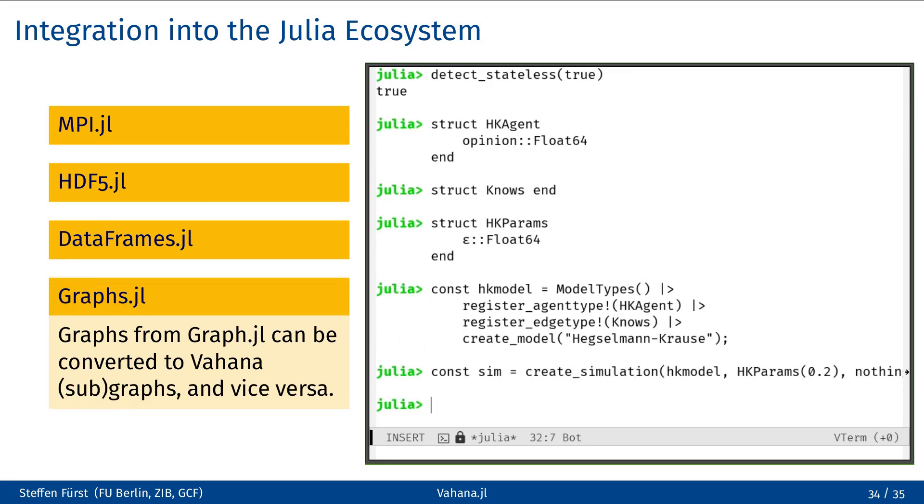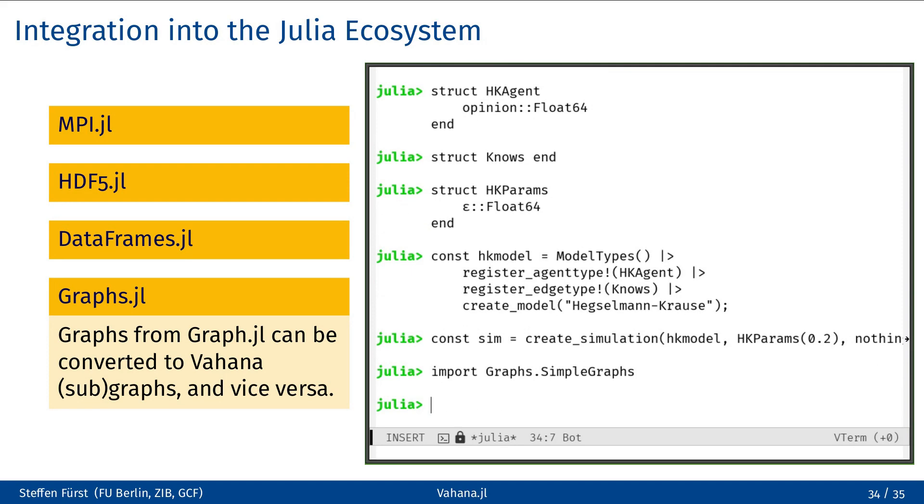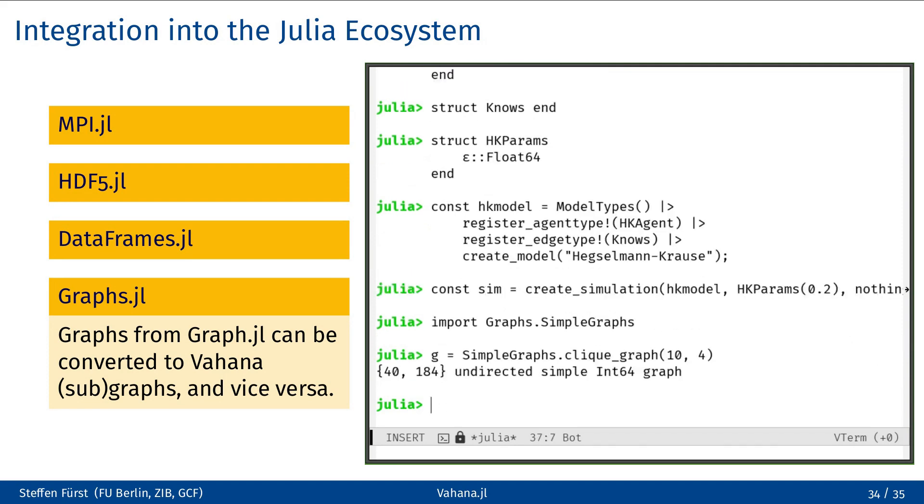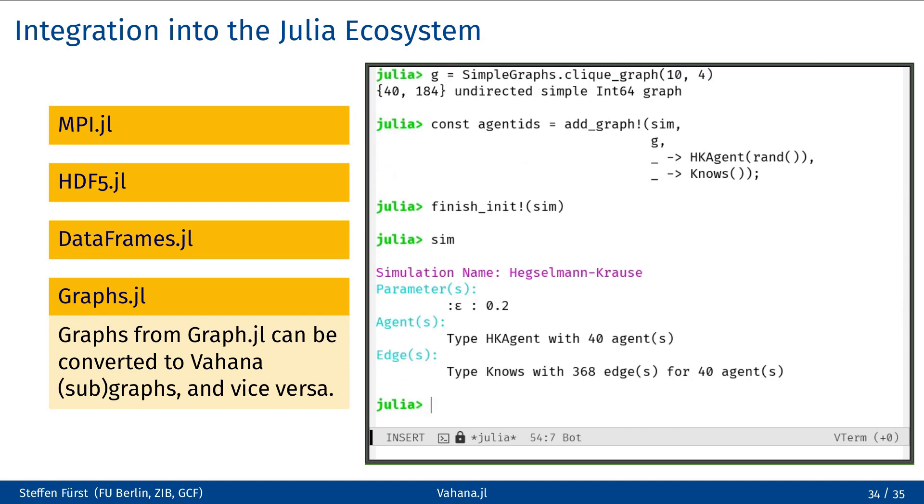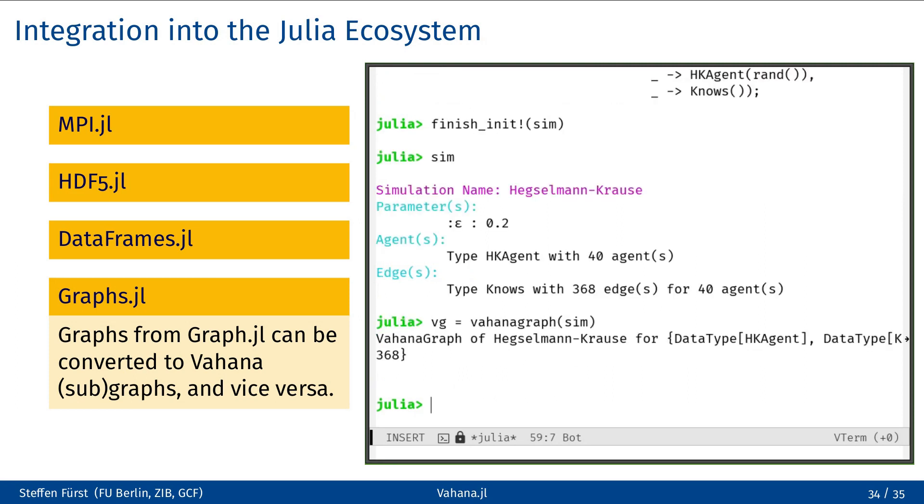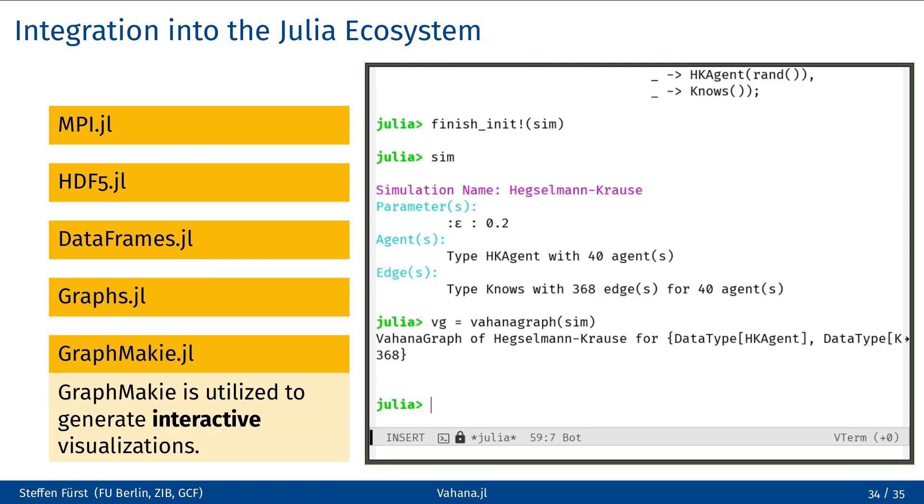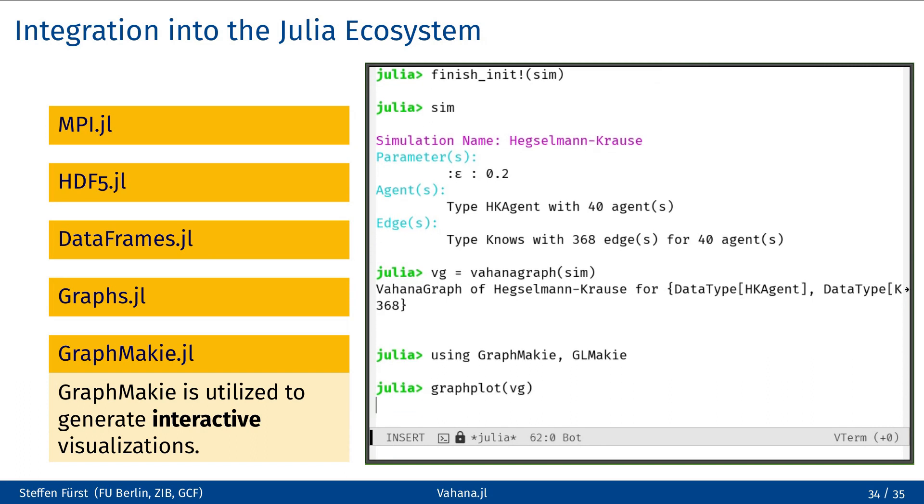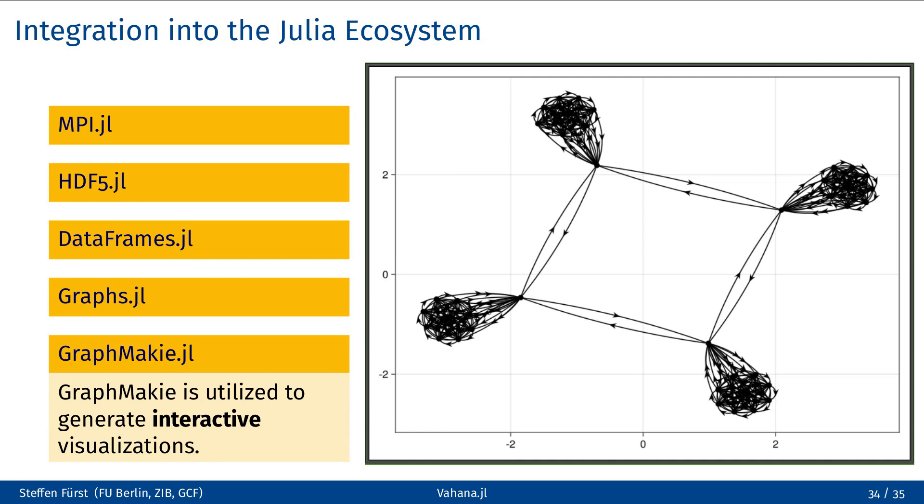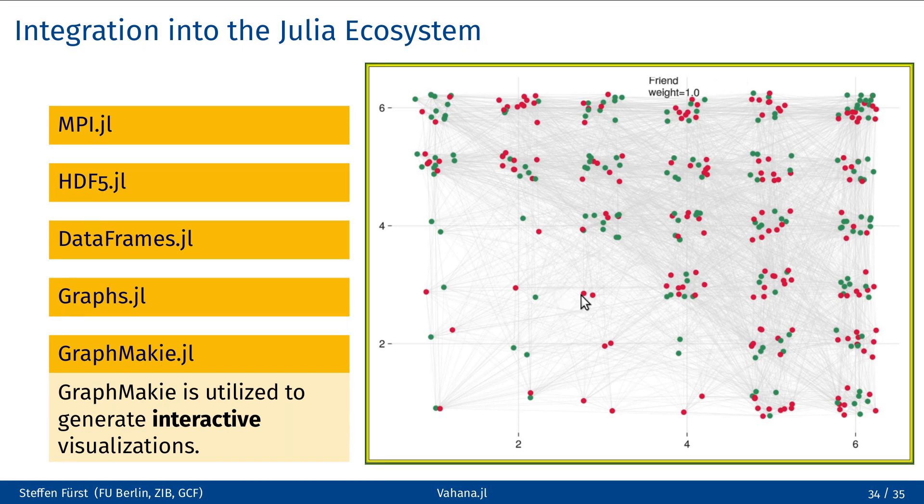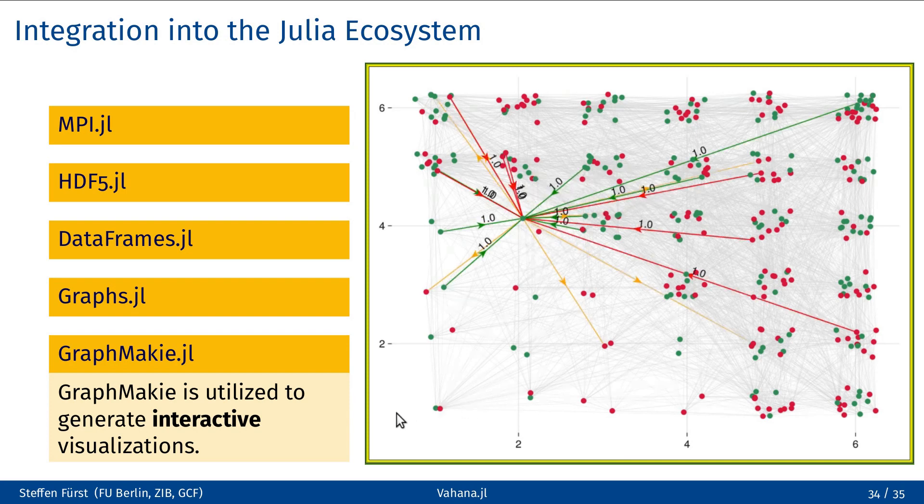As you may have guessed from the Hegselmann-Krause example, Vahana also provides an interface to Graphs.jl. Similar to rasters, graphs created with Graphs.jl can be included into a Vahana graph. In addition, Vahana supports the abstract graph interface, so you can apply the functionality of Graphs.jl to it. Thanks to the abstract graph interface, GraphMakie can be used for visualization of Vahana graphs without additional contribution from Vahana. However, Vahana also comes with additional functions that utilize the interactive interface of GraphMakie to generate interactive Vahana graphs. Here is shown an example of a model where the agents are living on a 6x6 raster. The create_graphplot function takes optional callback functions as arguments. These functions are called for each agent and edge and can set the properties for that element. Also, create_graphplot can optionally jitter the position of the agents to avoid overlaps.